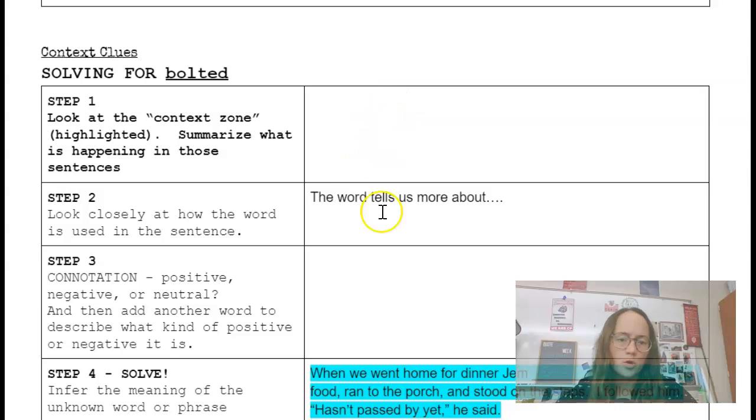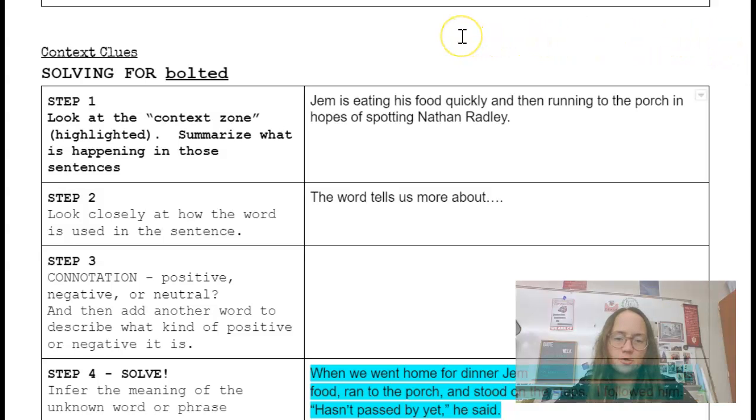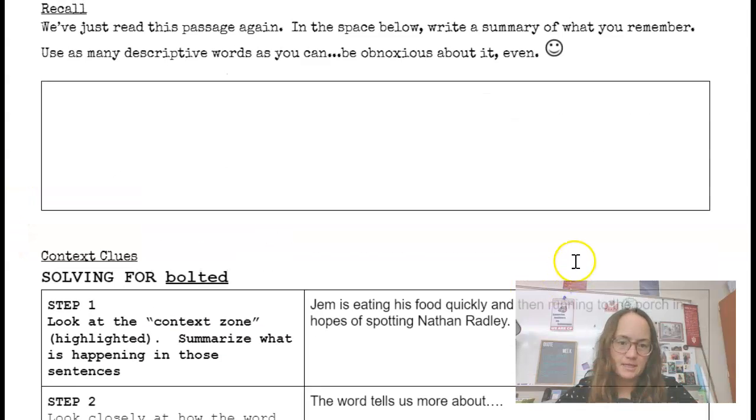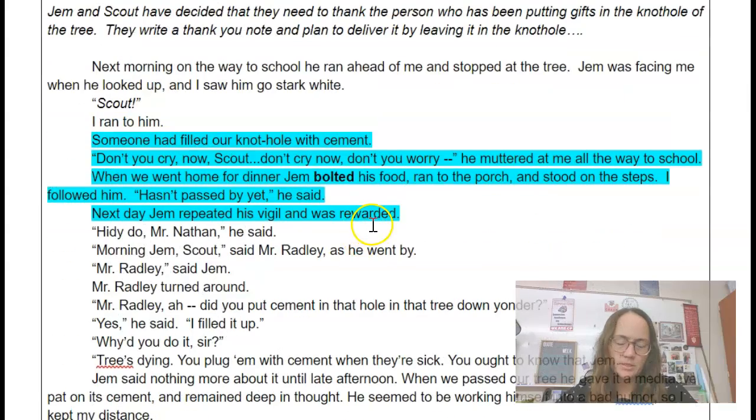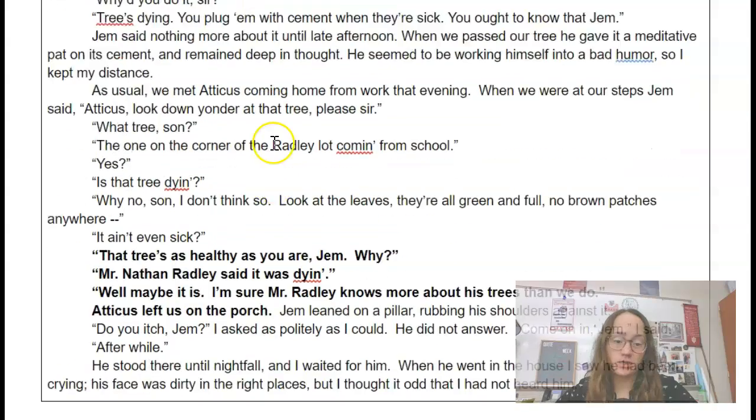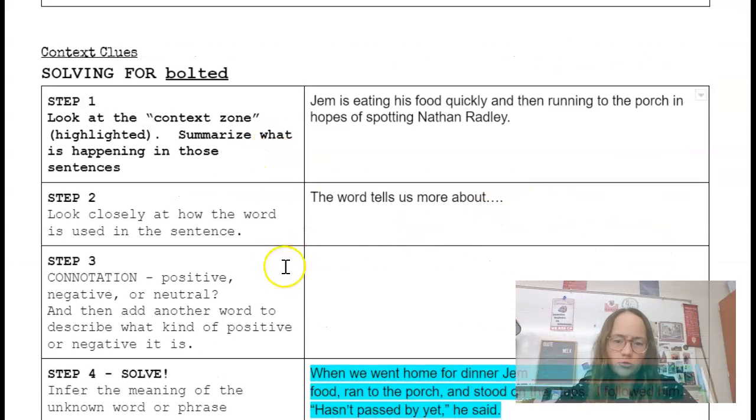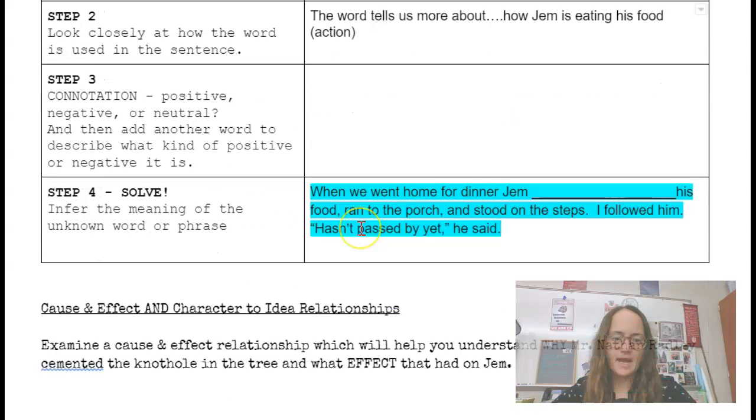So step one, context zone, what's going on here? So we know that Jem is running and trying to catch Mr. Radley or Nathan Radley as he passes by the house. So let's go ahead and just briefly summarize what's going on in that highlighted passage. So here we go. Jem is eating his food quickly and then running to the porch in hopes of spotting Nathan Radley. Now, that's what's going on in the context zone. Then we go to step two. We're looking closely at how the word is being used in the sentence.